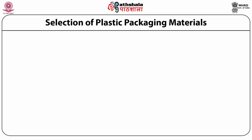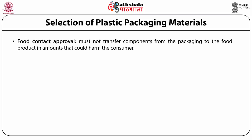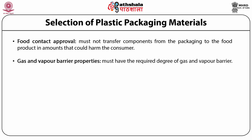Several factors must be considered when selecting packaging materials for MAP applications. Food contact approval: packaging material in contact with food must not transfer components from the packaging to the food product in amounts that could harm the consumer. Gas and vapor barrier properties: packaging materials for MAP must have the required degree of gas and vapor barrier for the particular food application.